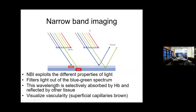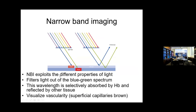This is different from narrowband imaging — they're not the same. Narrowband imaging is virtual; you press the button on the stack and it exploits the different properties of light, filtering out the blue-green spectrum. This wavelength is selectively absorbed by the vessels so the capillaries look brown, blue, or green. The experts say NBI is not advocated for UC cancer surveillance, though if you're doing UC surveillance and you see something without chromo, you could use NBI, iScan, or FICE depending on your equipment.